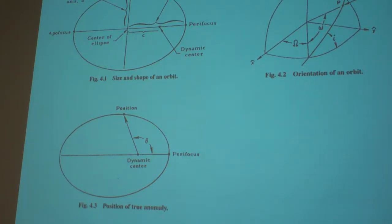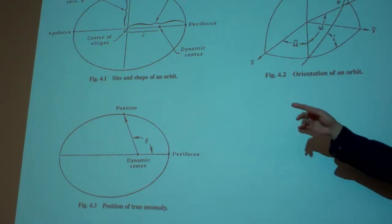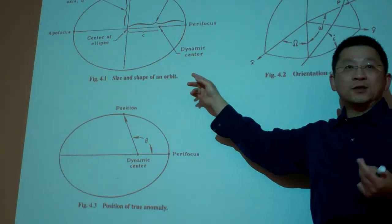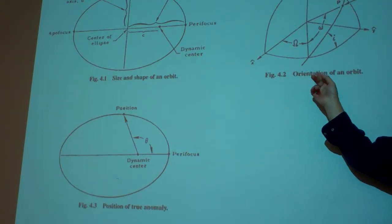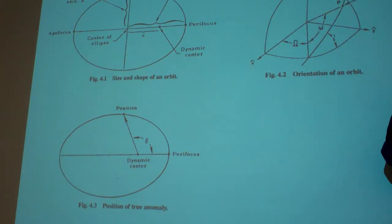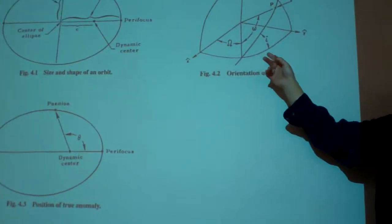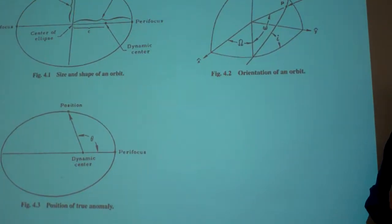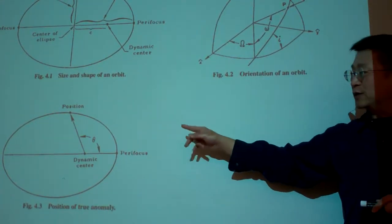So with this in mind, right now to the end of this page, you must know the six elements. Two are regarding determining the size and shape. Three are determining the relative orientation of the orbit plane to the Earth-centered coordinate systems. The last one is the true anomaly.